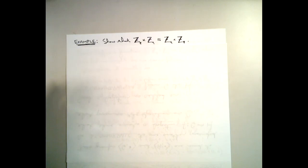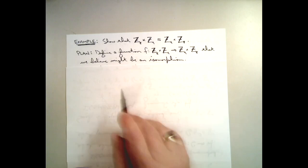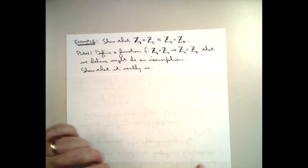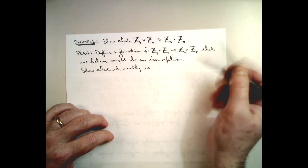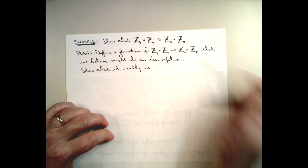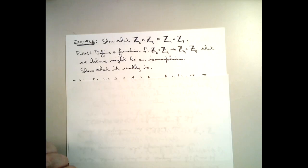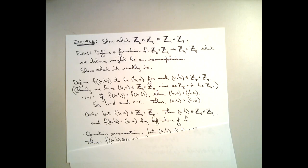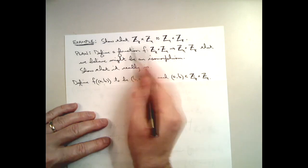Our plan is to define a function from Z8 × Z9 to Z9 × Z8 that we believe might be an isomorphism, and then show that it really is. That'll be enough, right? Because an isomorphism is a bijection between the two groups that preserves the operation. So if we can find an isomorphism between the two, then that will be enough to show that those two groups are isomorphic. A natural function for us to consider is the one that sends an element of Z8 × Z9 to Z9 × Z8 in this very natural way.